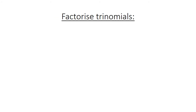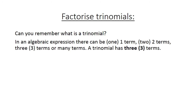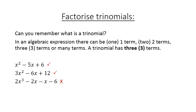Factorizing trinomials. Can you remember what a trinomial is? In an algebraic expression there can be 1 term, 2 terms, 3 terms, or many terms. A trinomial has 3 terms. For example: x squared minus 5x plus 6 — correct, 3 terms. 3x squared minus 6x plus 12 — correct, 3 terms. 2x cubed minus 2x minus 6 — incorrect, there are 4 terms. And x squared minus 5 — incorrect, only 2 terms.